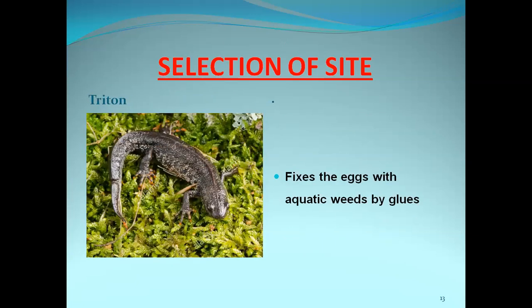Another example for selection of site is Triton, a urodele. This urodele lives in water and fixes eggs to aquatic weeds by glue. It lays eggs in the water body and attaches them to aquatic weeds so that they will be protected and stay in place.